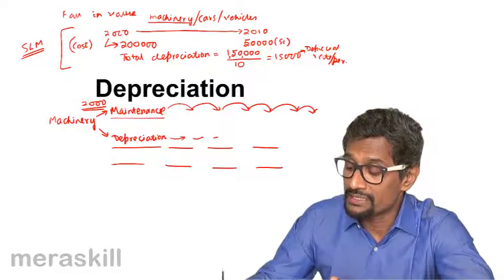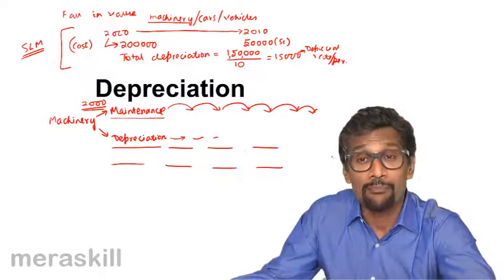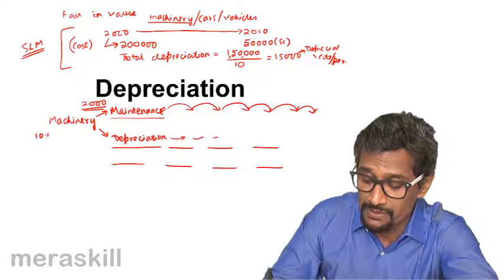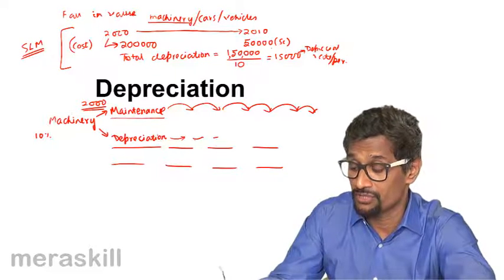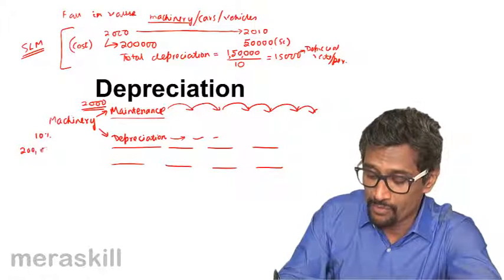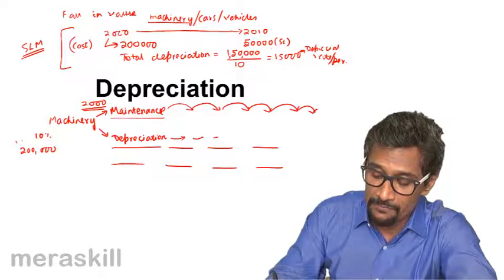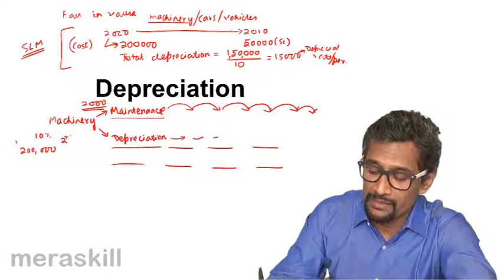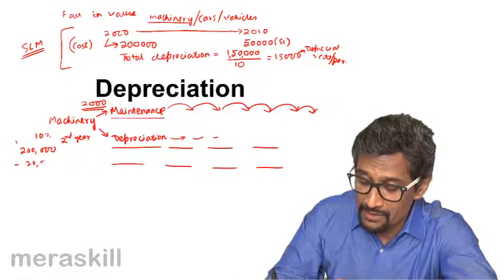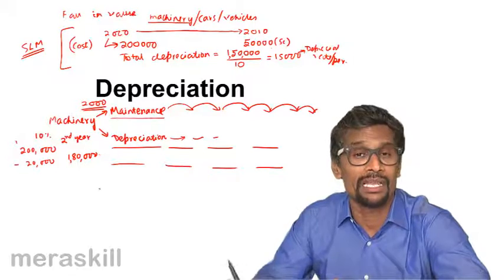Hence, if maintenance goes on increasing, the depreciation value goes on decreasing so that the net value remains the same. So in such cases, some machinery, some fixed rate has been given. Say, 10% depreciation value takes place. So the value goes on decreasing as a result of it. So suppose the same machinery, 2 lakhs, we bought it in the first year. At the end of the first year, the value will fall by 10%. So minus 20,000. So the value will now be 1,80,000.